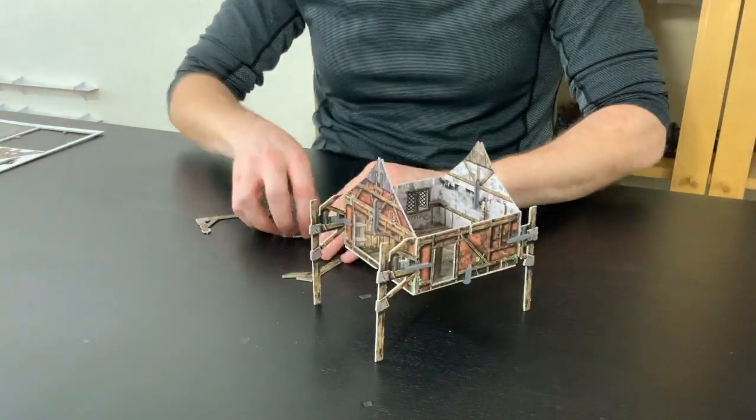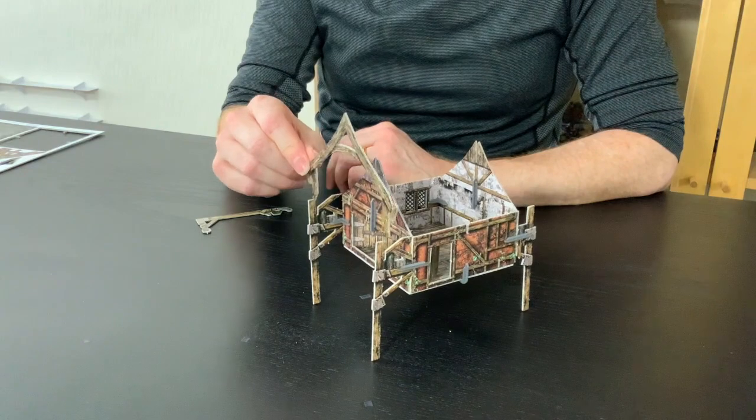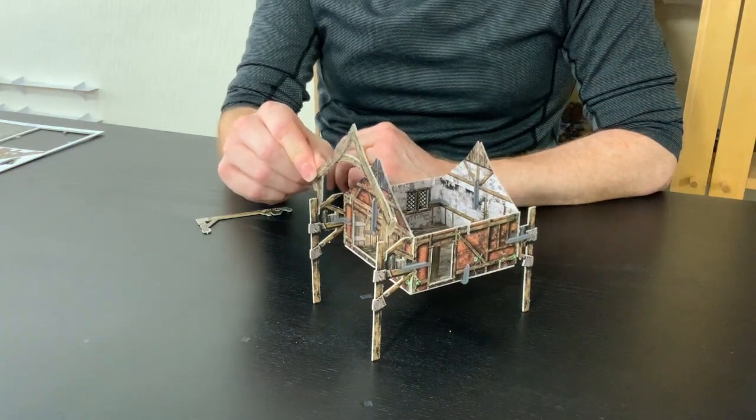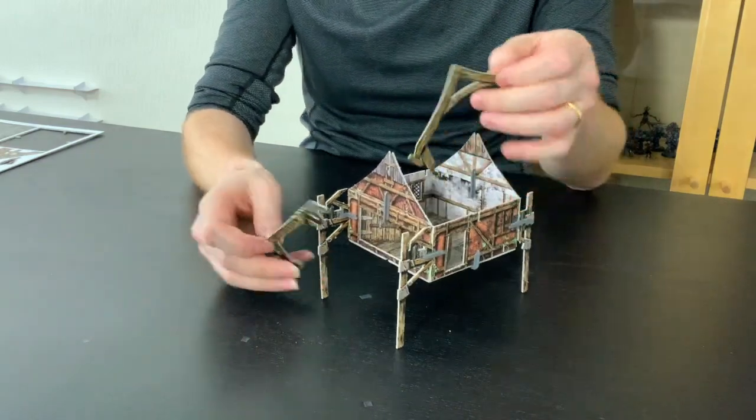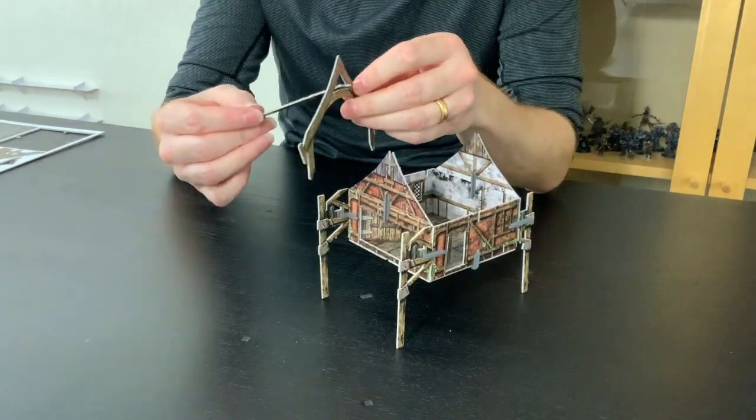Okay, so what we want to do now is we want to put this nice little kind of apex beam in here as well, but we're also going to want to insert this little crane at the same time.